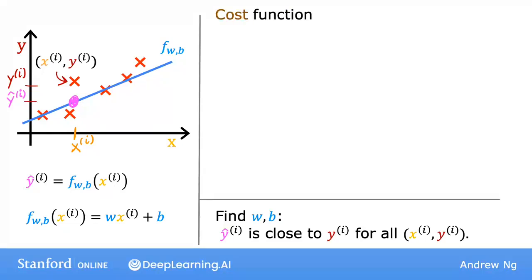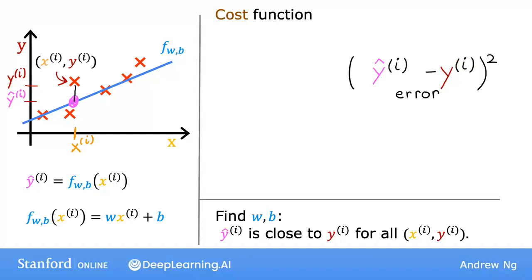The cost function takes the prediction y-hat and compares it to the target y by taking y-hat minus y. This difference is called the error — we're measuring how far off the prediction is from the target. Next, let's compute the square of this error. We're going to want to compute this term for different training examples i in the training set. So when measuring the error for example i, we'll compute this squared error term.